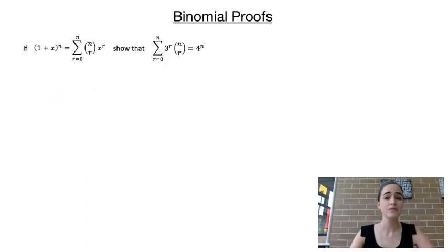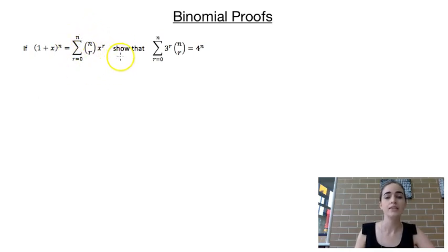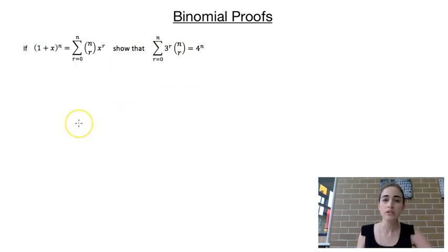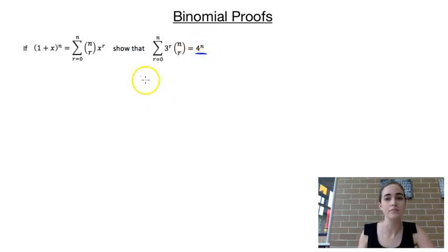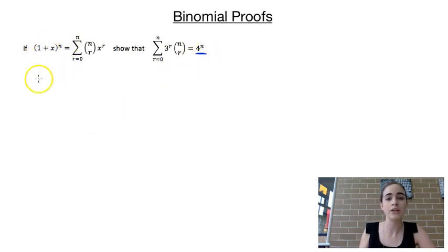Our second example asks us to show that if (1 + x) to the power of n equals this summation, then a certain statement is true. We're going to use a similar method. We know we want to end up with 4 to the power of n, and on the left-hand side we have (1 + x) to the power of n, so to make that into 4^n we're going to let x equal 3.